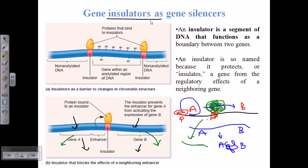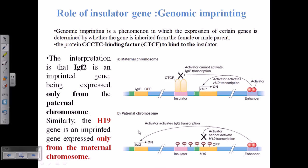There is expression of certain genes which must be coming from our father, and also expression of certain genes which must be coming from our mother. This process is called genomic imprinting. The role of the insulator gene at the major scale is genomic imprinting, because genomic imprinting is simply a phenomenon in which the expression of certain genes is determined by whether the gene is inherited from the female or the male parent.